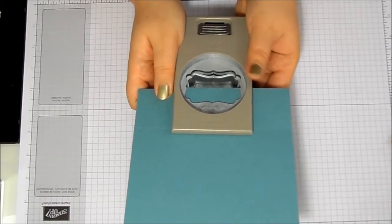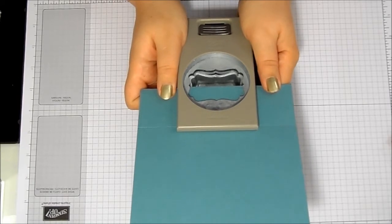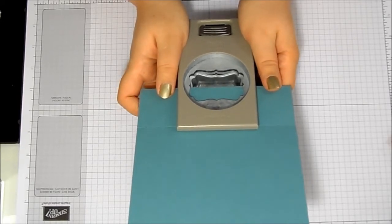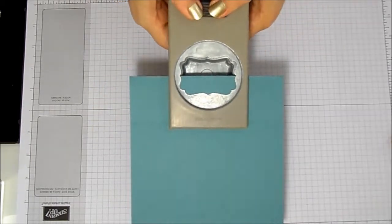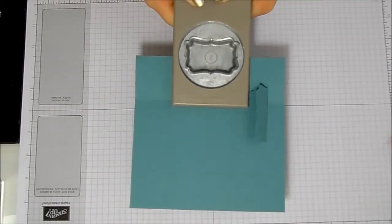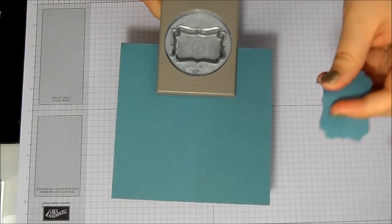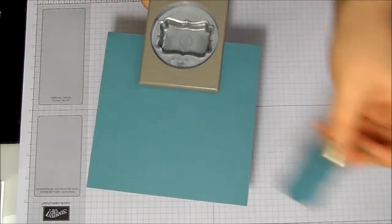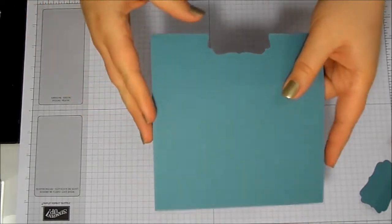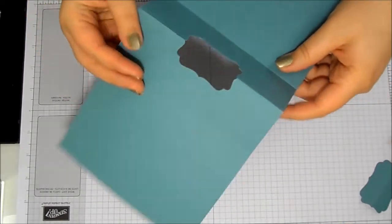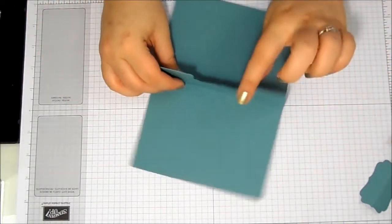You could use your grid paper or measure or be really precise—I'm not very precise, I prefer to wing it—and punch. And it does take a little bit of pressure because you are cutting through two layers of cardstock. So there's your label piece, and then when you take your punch away you have this, so this is where your gift card goes.